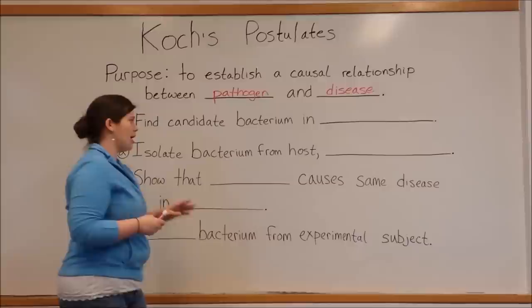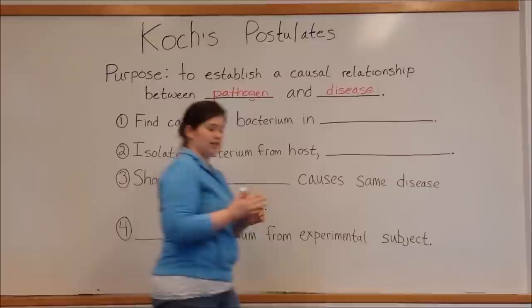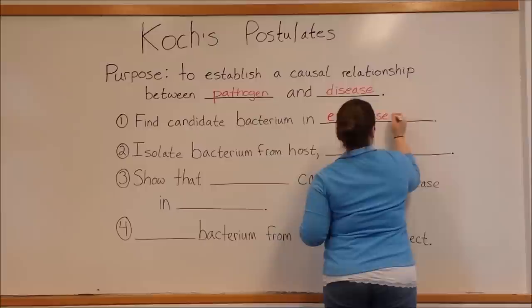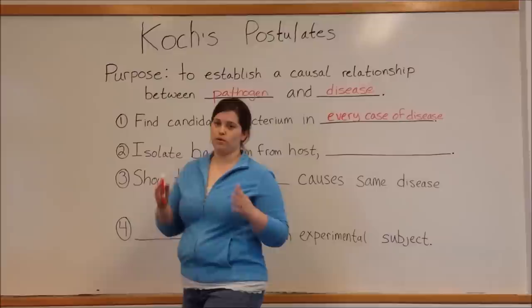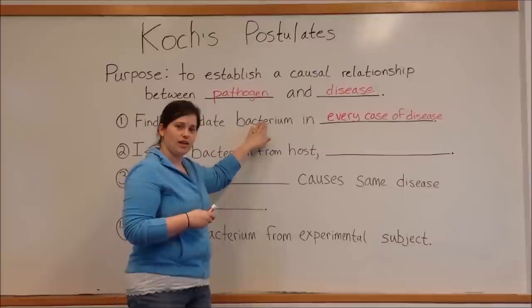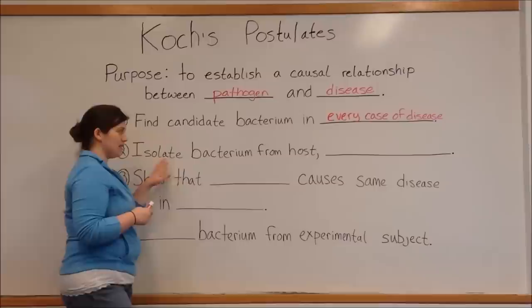Let's look at these four criteria. First, you have to find the candidate bacterium in every case of the disease. So if we go with our example of anthrax, every single time you have someone with anthrax, you have to find the specific bacterium that you think causes that disease in every case of that disease.